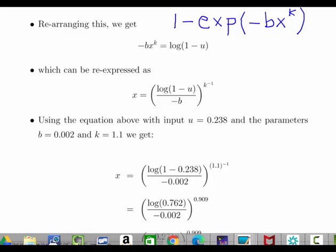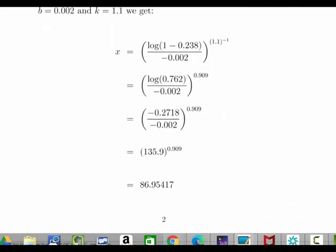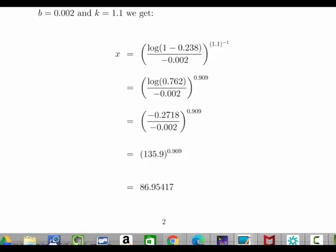Using the equation above with the inputs 0.238 and the parameters b equal to 0.002 and k equal 1.1, we get log of 1 minus 0.238 divided by minus 0.002 to the power of 1.1 to the power of minus 1, which is 0.909. A little bit of calculator work, and we end up with 135.9 to the power of 0.909, which is 86.95.